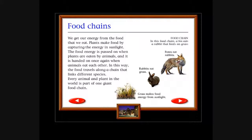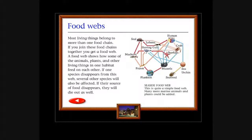Food chains: We get our energy from the food that we eat. Plants make food by capturing the energy in sunlight. The food energy is passed on when plants are eaten by animals, and it is handed on once again when animals eat each other. In this way, the food travels along a chain that links different species. Every animal and plant in the world is part of one giant food chain. Food chain: In this food chain, a fox eats a rabbit that feeds on grass. Foxes eat rabbits, rabbits eat grass, grass makes food energy from sunlight. Fox eats rabbit, fox excretes out rabbit, grass grows from the rabbit excrement, rabbit eats grass. Fox eats rabbit and there we go, the circle of life.